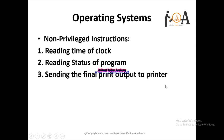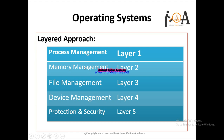Now the layered approach: you can make a diagram of this. Layer 1 is process management, layer 2 is memory management, layer 3 is file management, layer 4 is device management, and layer 5 is protection and security. Whenever you want to design or implement an operating system, you work in a layer-wise manner so that you can manage each and every aspect of the OS in a specific layer.